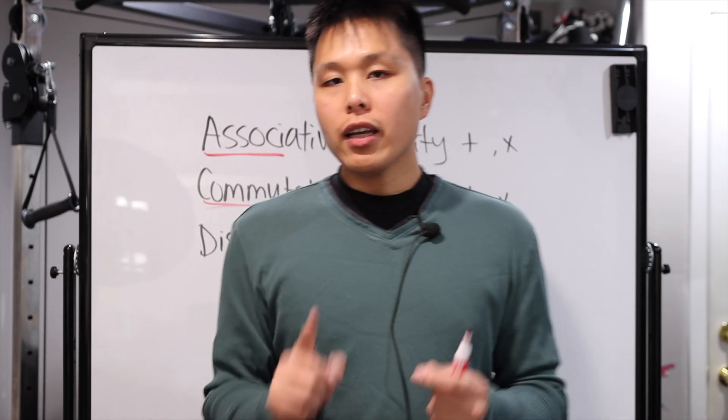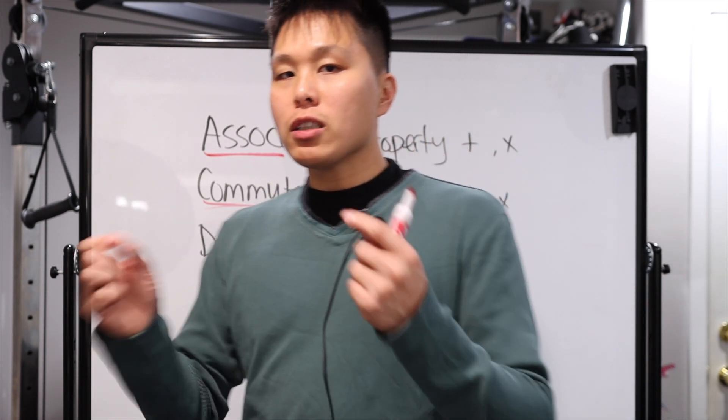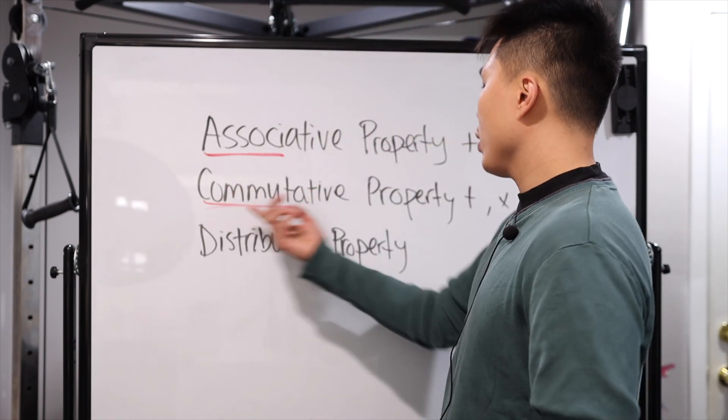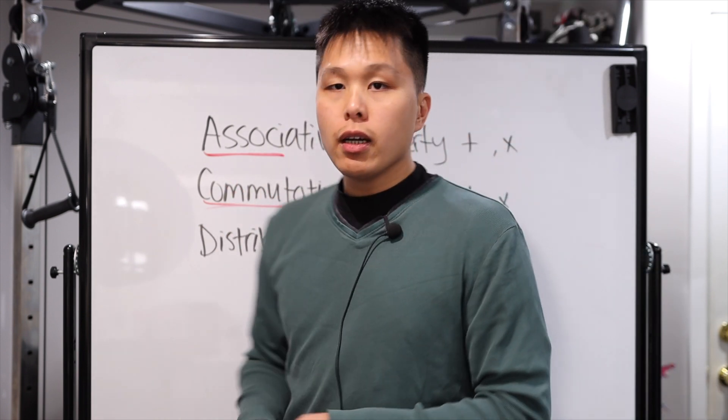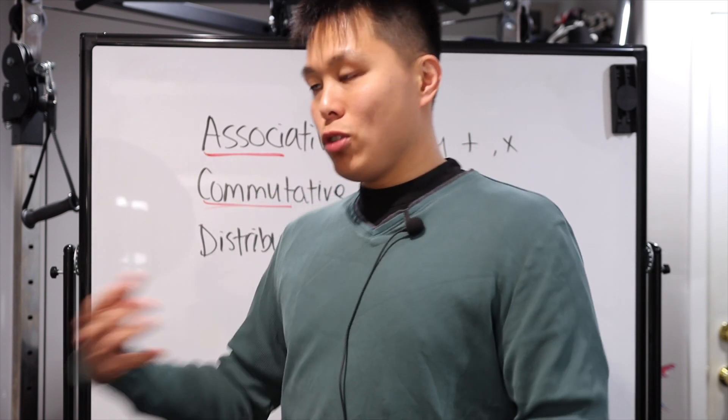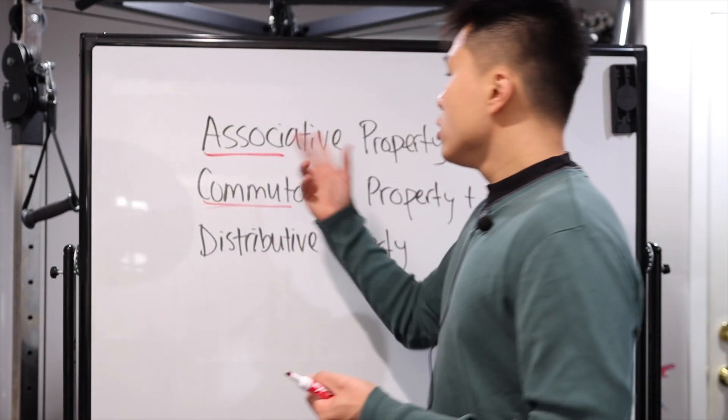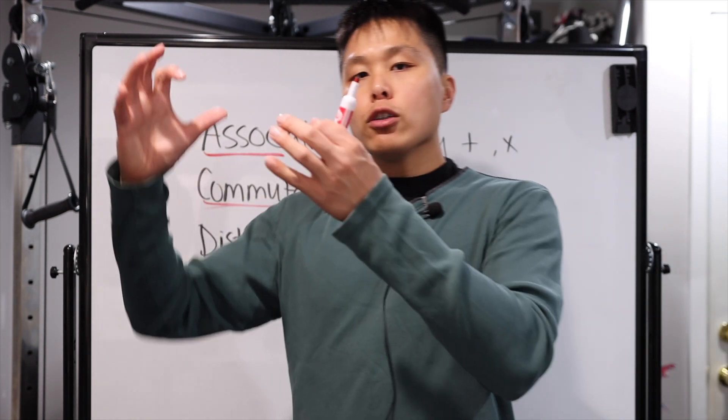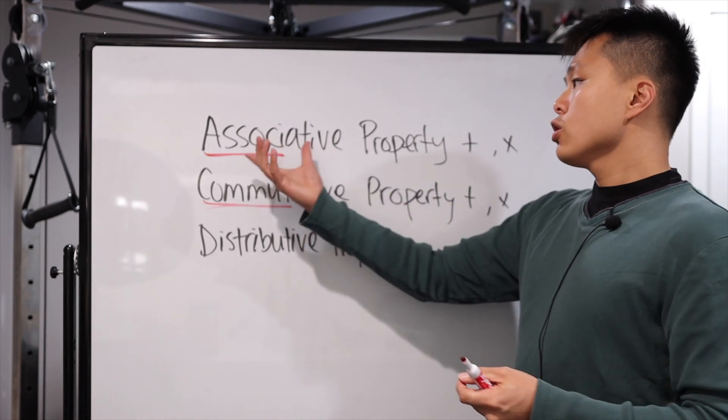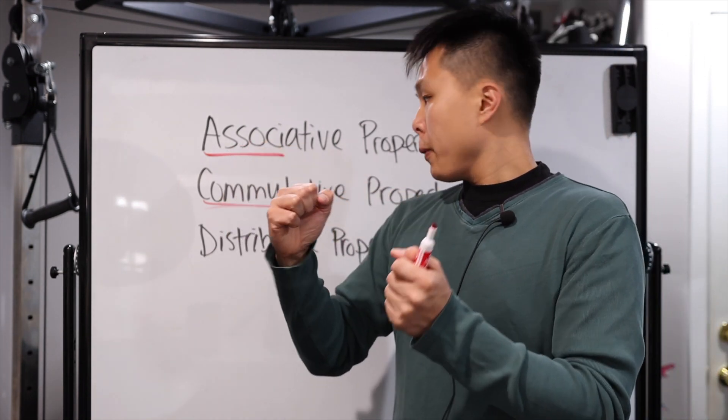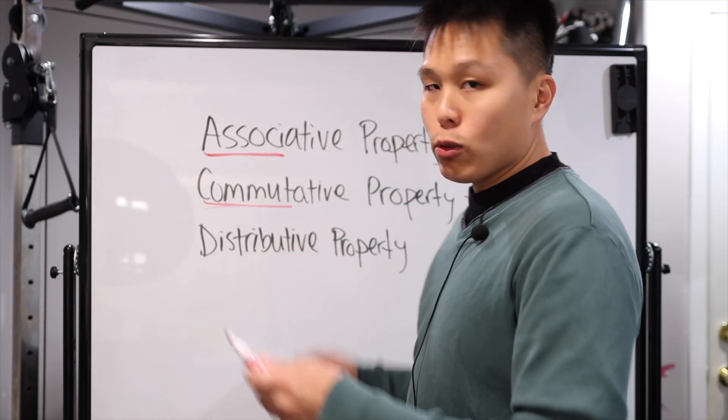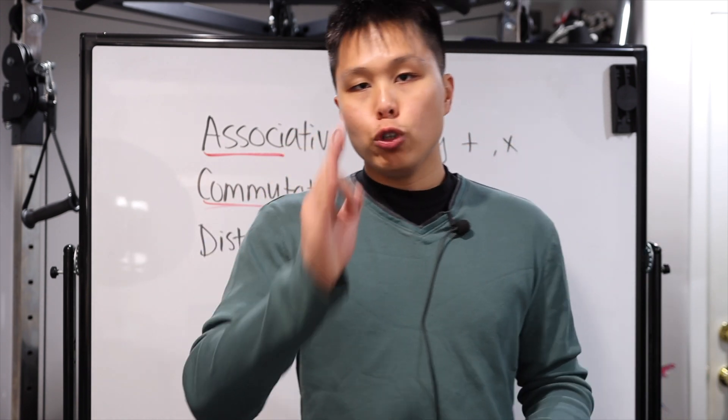Commute is moving around. So think of it this way. Since commute is moving around, you can move the order of the number around. That could be a way to remember what commutative property means. Associate usually is how you relate, usually your associates or who you intermingle with. So in that case, it doesn't matter how you group the numbers together. You want to group the first section or the second section or the third section. It doesn't matter. So associate, you're grouping. Commutative, commute, you're moving around and distributive. You're distributing. Equal share to everyone. So that's a way for you to remember it.